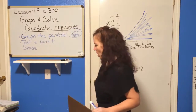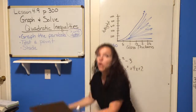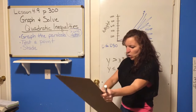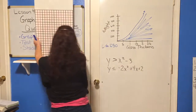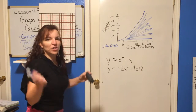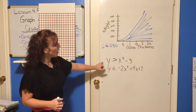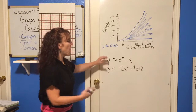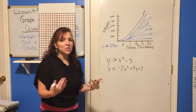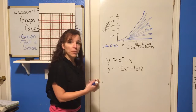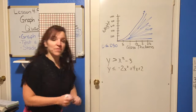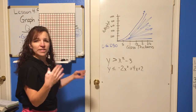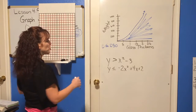Next we want to graph systems of quadratic inequalities. Remember, you don't have to want to — you just have to do it. If you're having trouble with the graphing, go back to sections 4.1 or 4.2. With a system of inequalities we want to find where they intersect — what combination of numbers will make both inequalities true — just like we did with systems of linear inequalities.